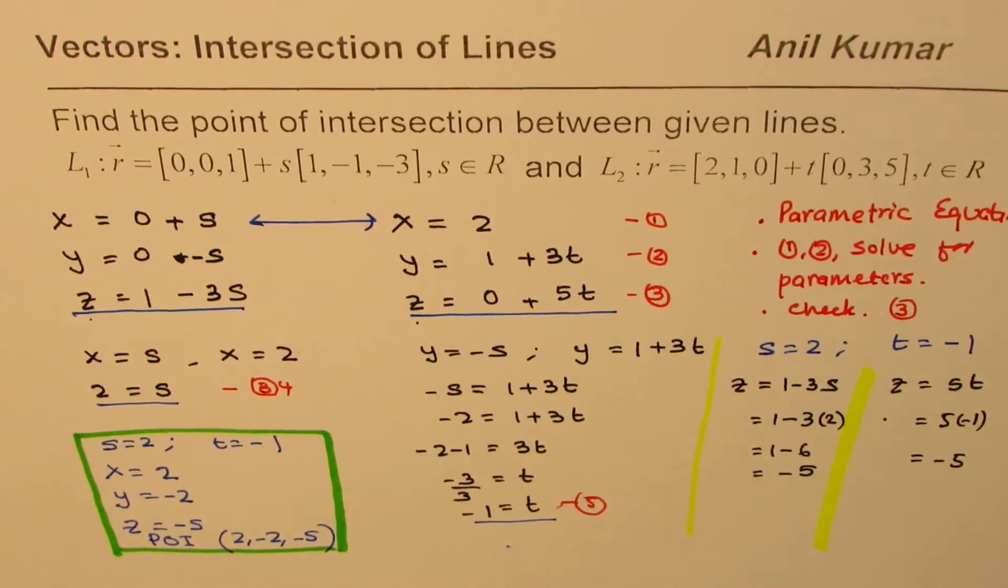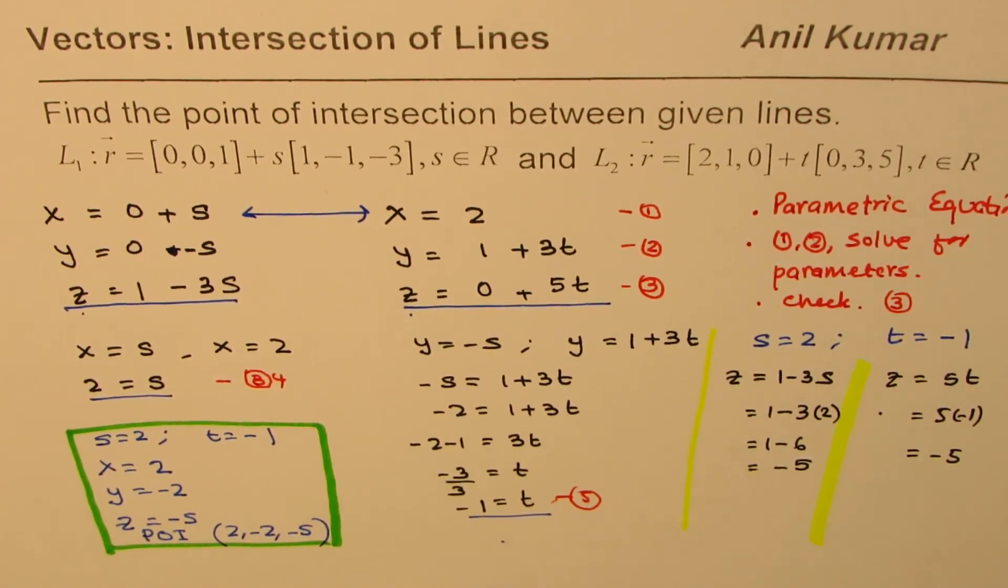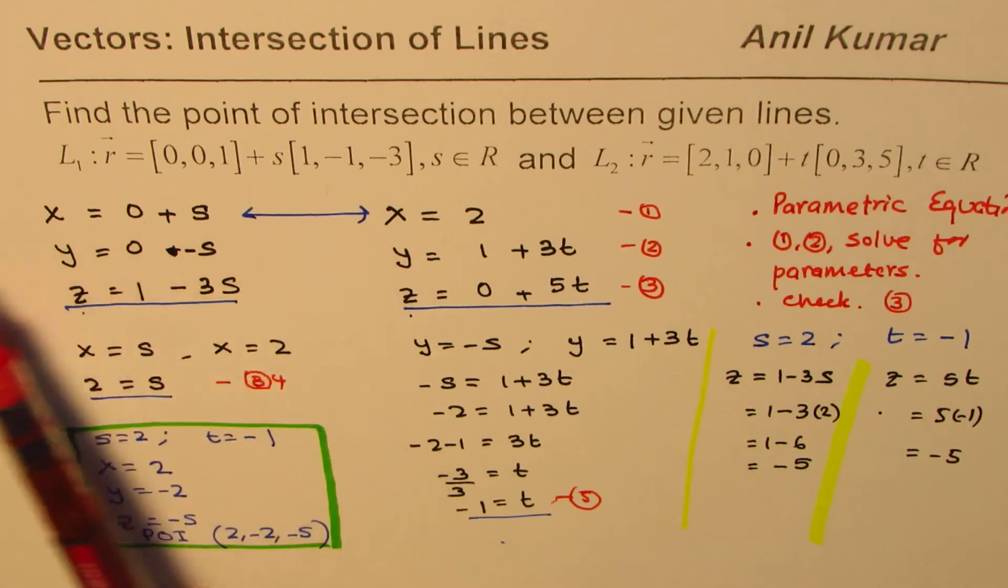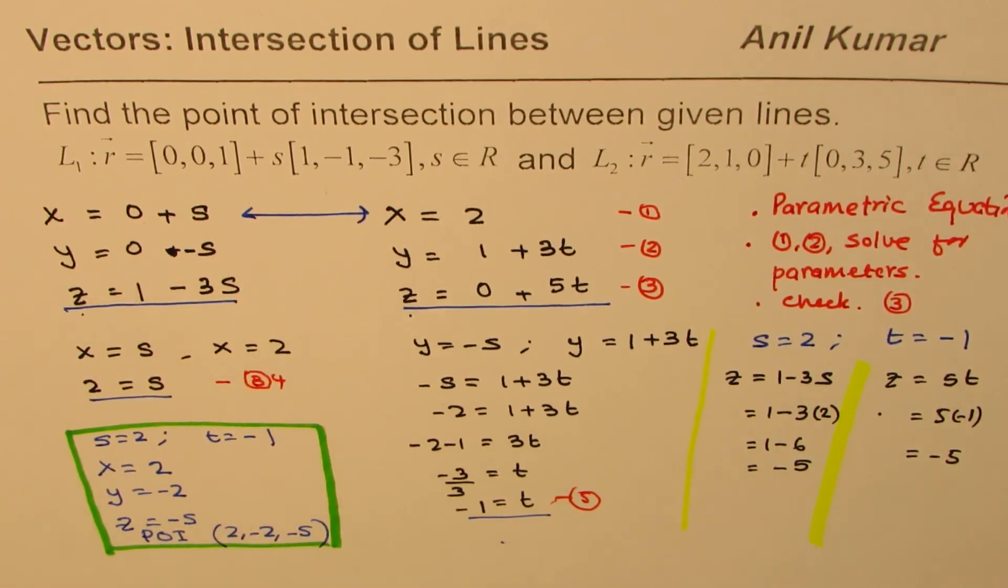So I hope these steps help you to find point of intersection between any two given lines. So the first step should be write in parametric forms, and then comparing each part, you can find the two parameters, substitute those values in the third, and see if you get the same point, exactly same point for z. In that case, we do have a point of intersection, and if you get different values here, then that means the points do not intersect. I'm Anil Kumar, and I hope that helps. Thank you, and all the best.